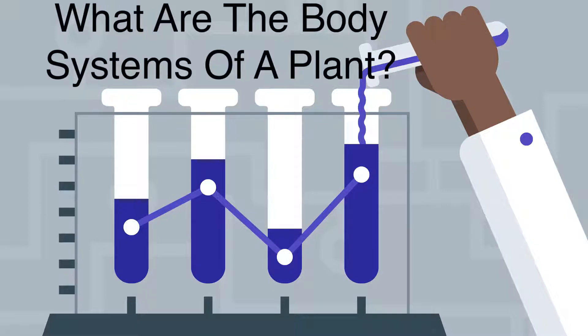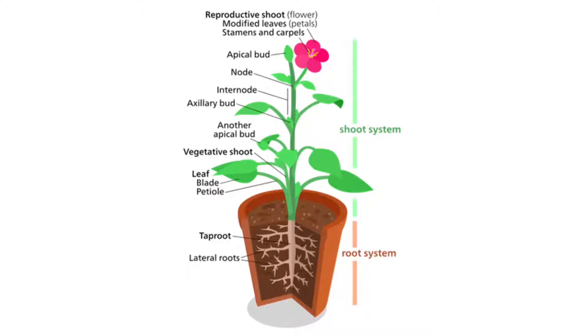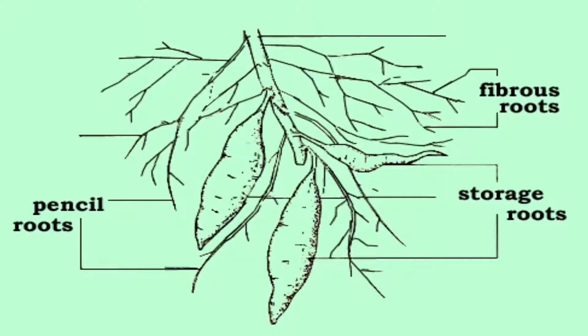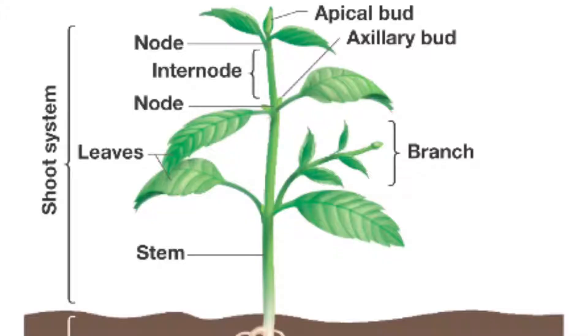What are the body systems of a plant? Plants can be divided into two body systems: the root system and the shoot system.